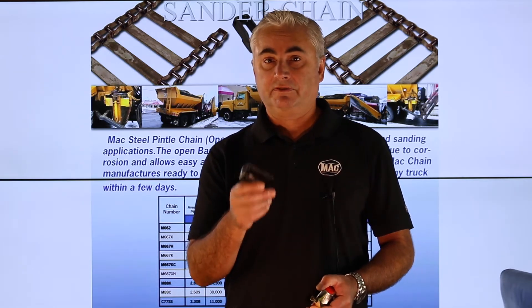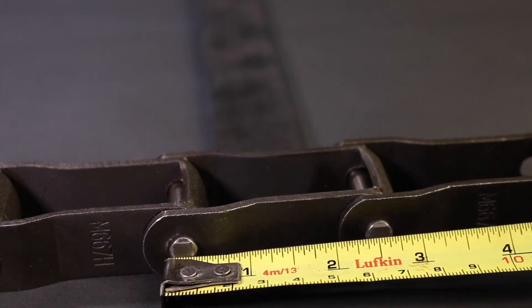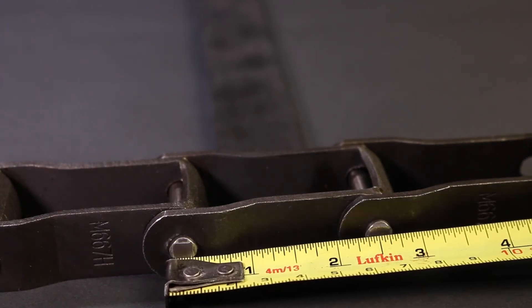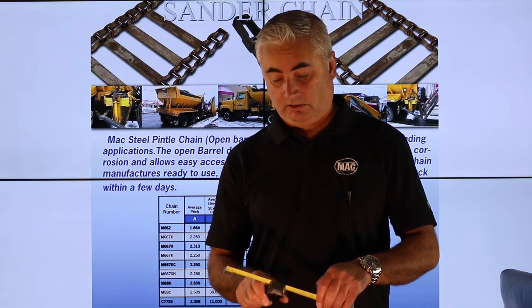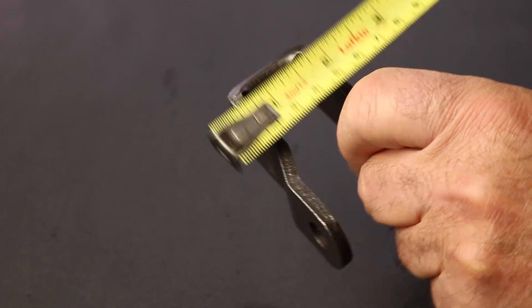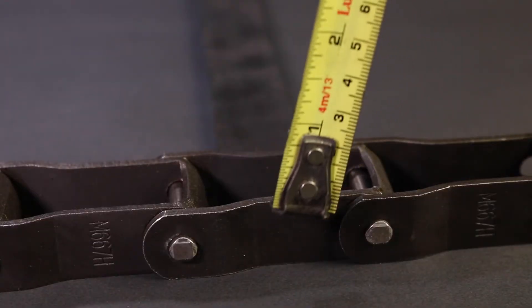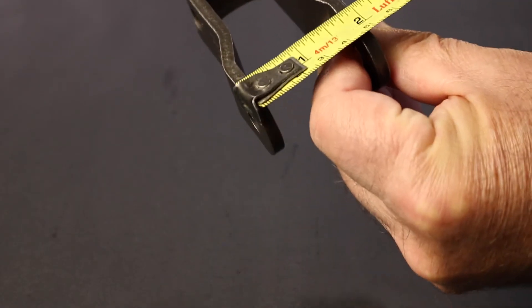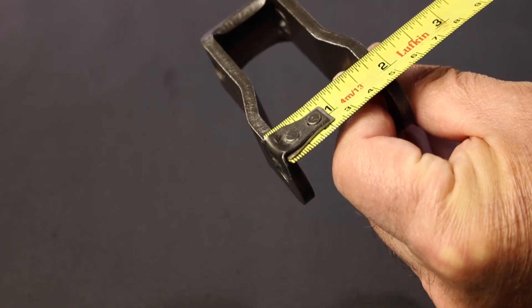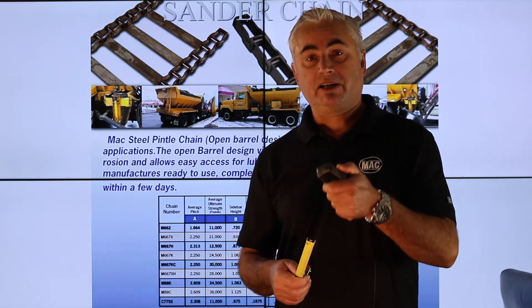To measure your chain link, first you want to measure the pitch of the chain — that is center to center on the chain pins. That will give you your chain pitch. Next, you want to take some calipers or even a tape measure and measure the thickness of your side bar. You then want to measure the side bar height or your link height, then measure outside to outside on the narrow end of the link, and then outside to outside on the wide end of the link. With those dimensions and a copy of our chain ordering guide, you should be able to determine the correct link of your chain.